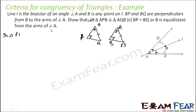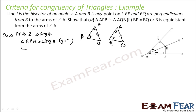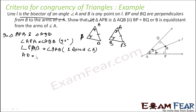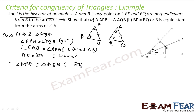In triangle APB and triangle AQB: angle APB is equal to angle AQB — both 90 degrees. Angle PAB is equal to angle QAB — since L is the bisector of angle A. AB is equal to AB — common side. Therefore triangle APB is congruent to triangle AQB by AAS.